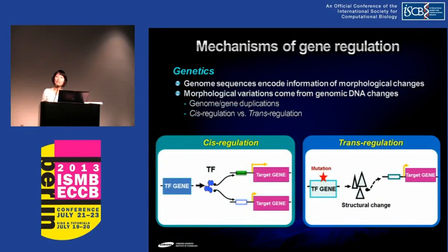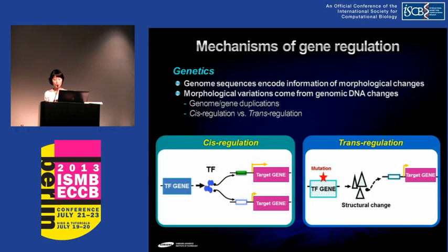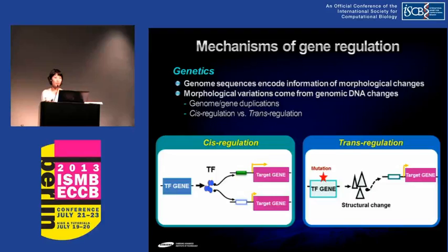First, I start with genetics. In genetics, we try to translate genetic information included in the genome, and we aim to find the sequence variation that affects morphological variation. The sequence variation can occur as cis-regulatory elements or trans-acting loci, and they eventually change the gene expression of target genes or the activity of target genes, and then change the morphology.